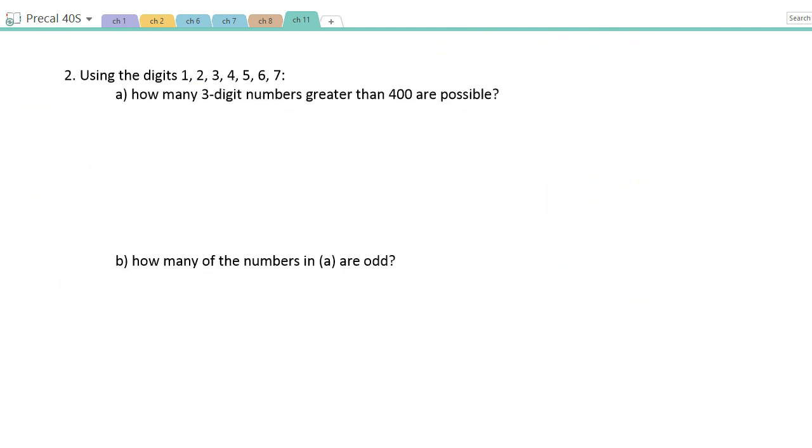Okay. Your turn number 2. And hopefully you're doing this like I suggested before, is where you watch it once, and then once the video is over, try it again yourself without me doing it. It says using the digits 1, 2, 3, 4, 5, 6, and 7, how many three-digit numbers greater than 400 are possible?